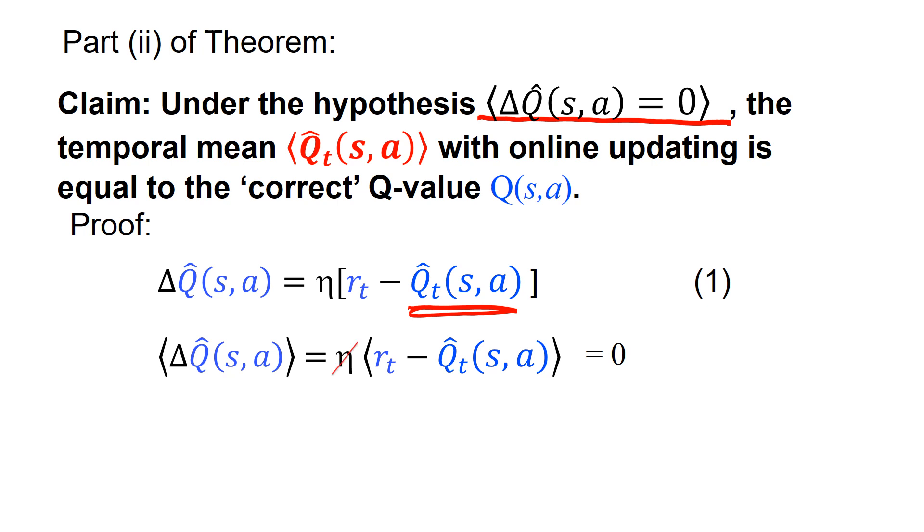Now, if it's zero, then I don't care about the learning rate anymore. I can cut it out. And so I have zero equals the mean reward minus the mean Q hat. But the mean reward is by definition, the Q value, the exact Q value. The Q value is defined by the expectation over the rewards.